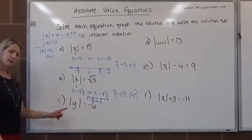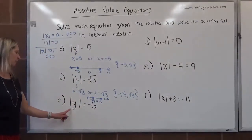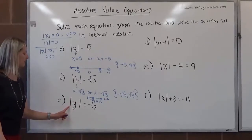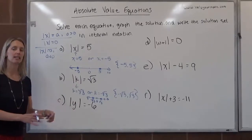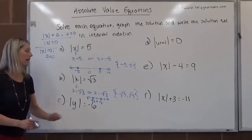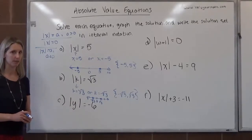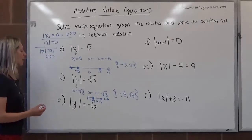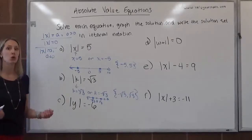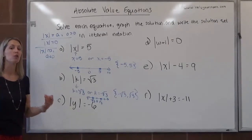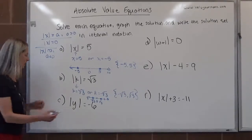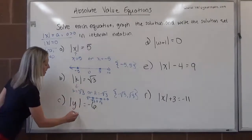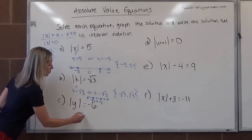For letter C, we have the absolute value of y equals negative 6. This is saying: find a number, take its absolute value, and the result is negative 6. That's not possible. In this case, there is no solution — there is no case to consider. So we can write no solution.